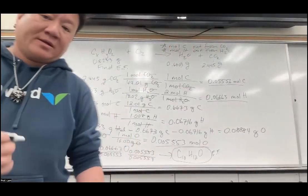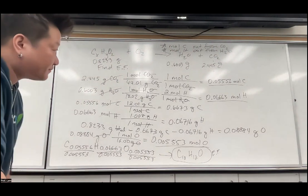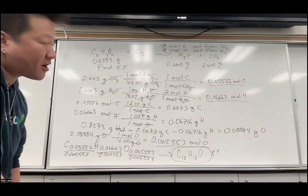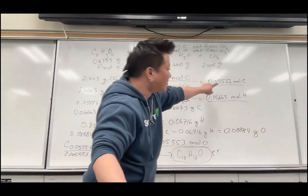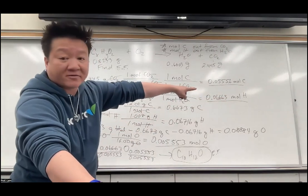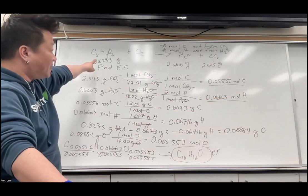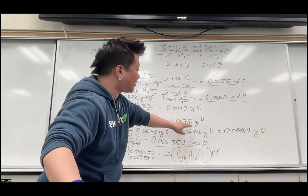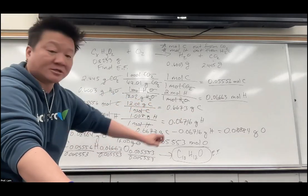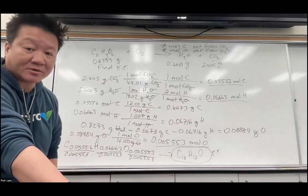It looks like a lot, but remember — one step at a time. It's a methodical approach. Once you have moles of carbon and hydrogen, and you want moles of oxygen, subtract out the mass of carbon and hydrogen from the total. Since those are in moles, convert to grams first, then subtract to get grams of oxygen, convert to moles of oxygen, and proceed as usual to get the empirical formula.